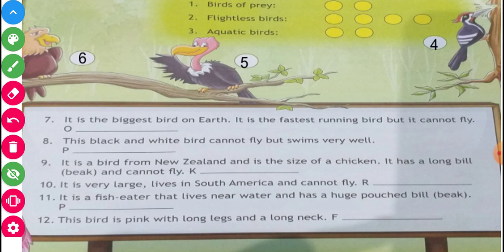Another: it is a bird from New Zealand, cannot fly. P — long, cannot fly. B. Another is 10th comment: it is very large, lives in South America, cannot fly — another love and comment also: fish eater. Which type of beak — P also blue character is here. And the last: this bird is pink with long legs — flamingo.